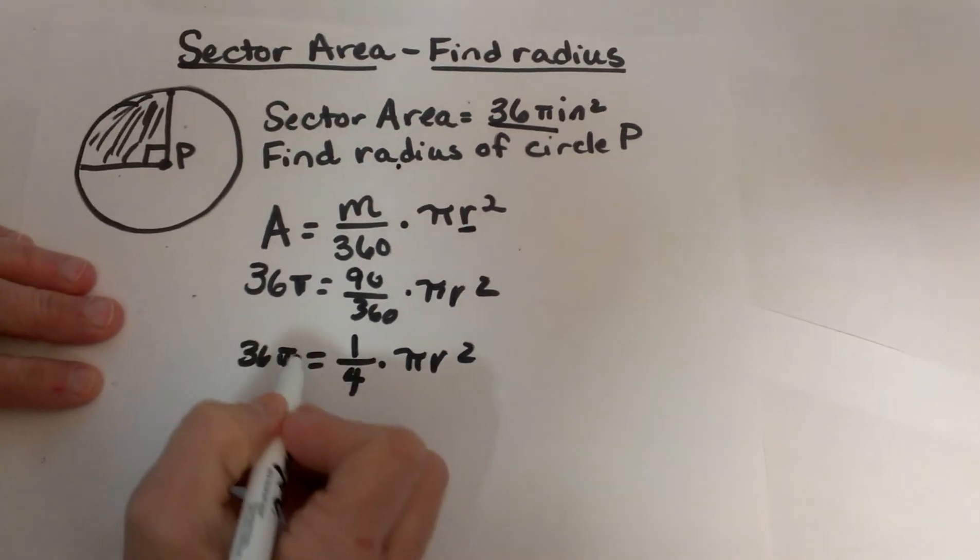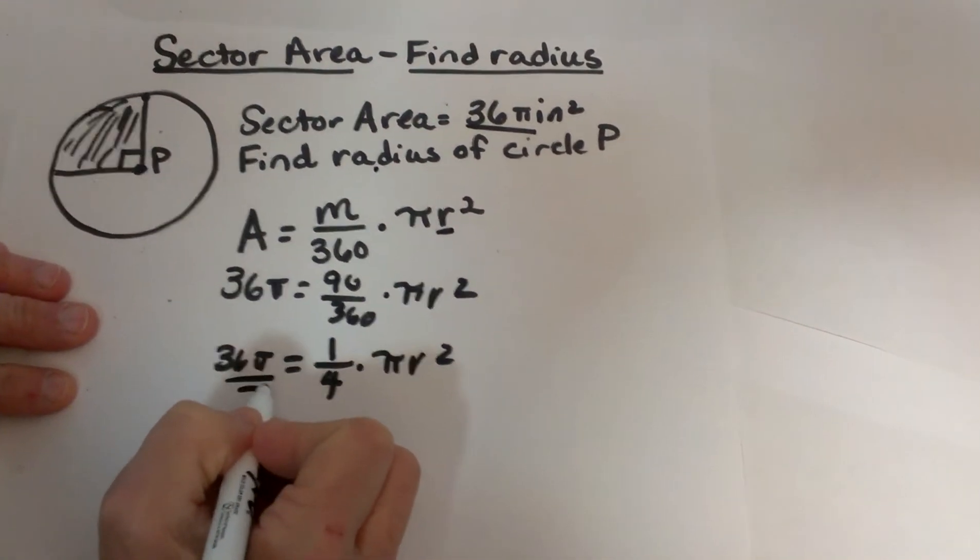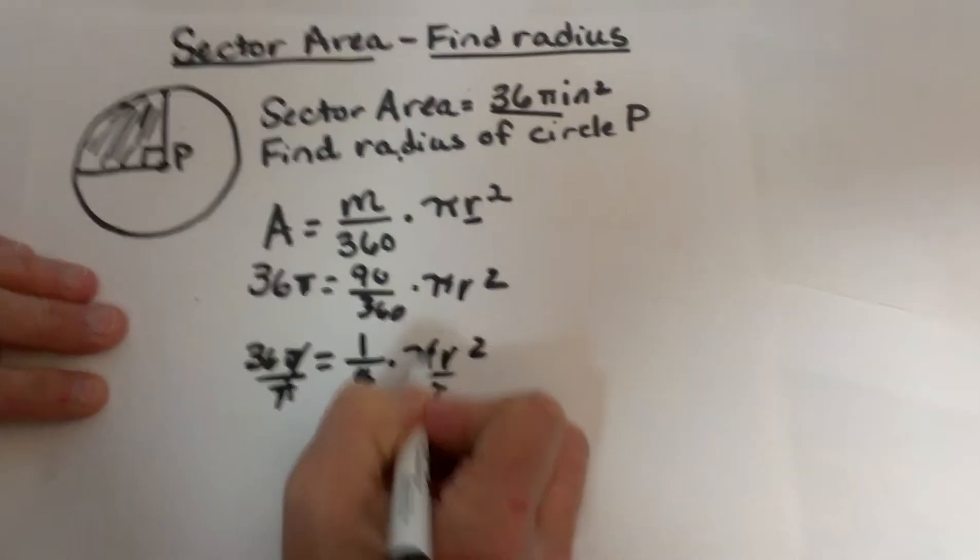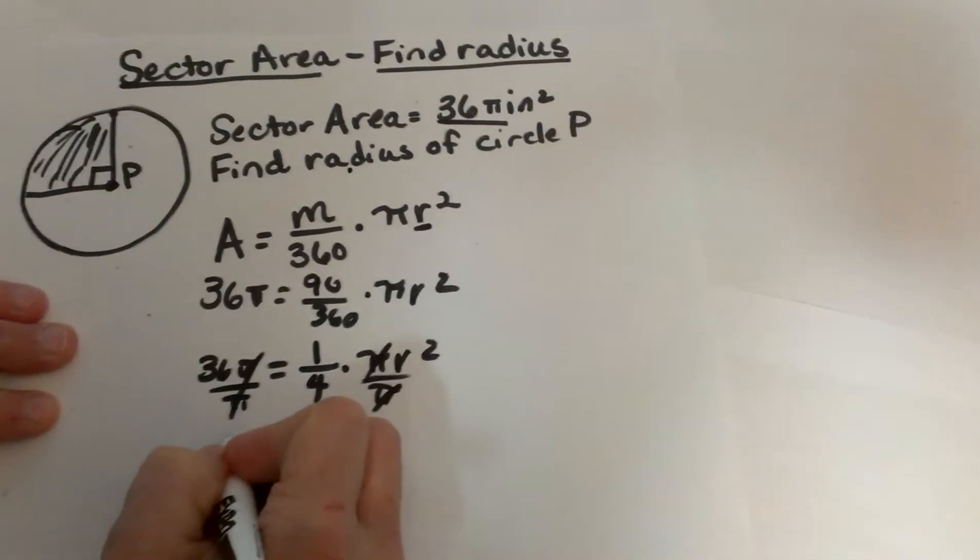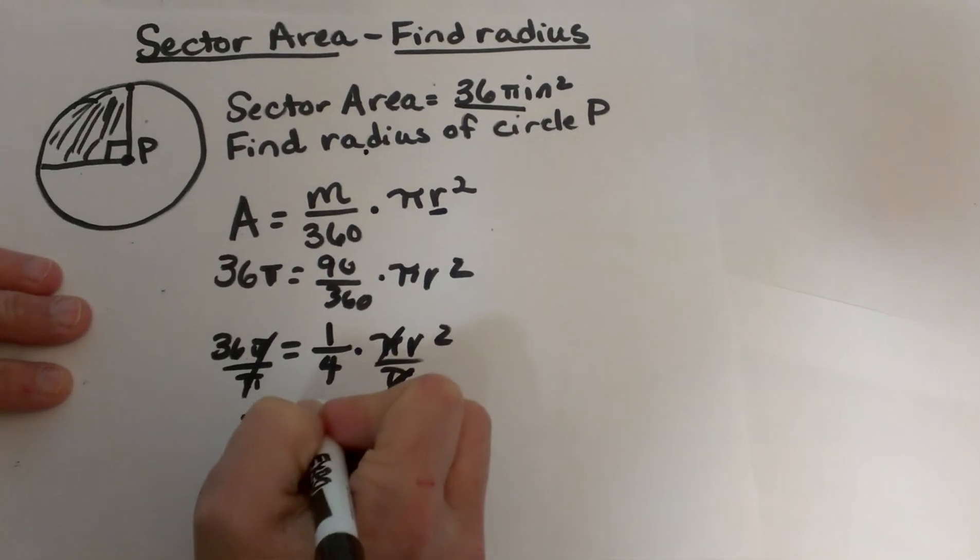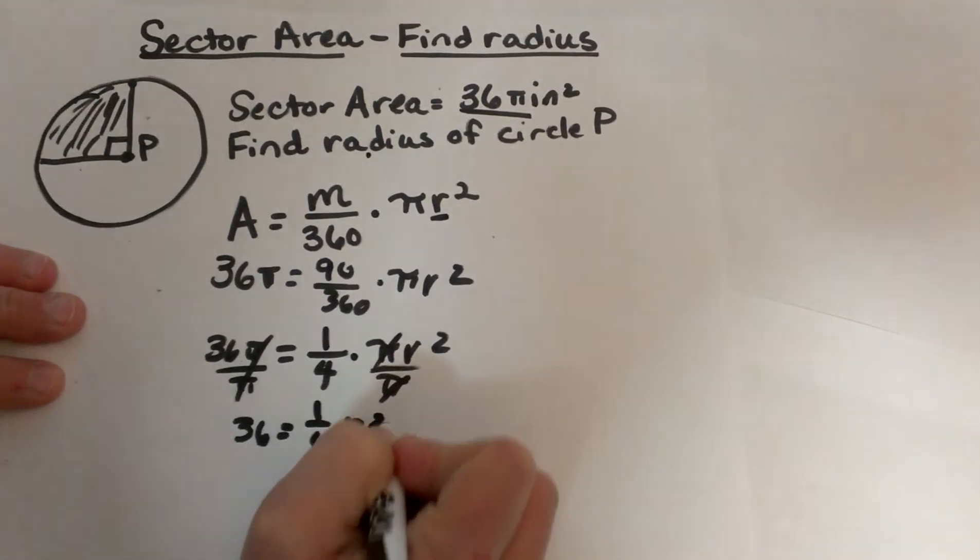Now notice I have a π on both sides so I am going to divide both sides by π which basically just means I can cancel one out from both sides. So now I am left with 36 equals one fourth of r².